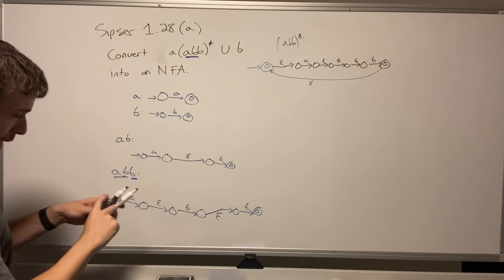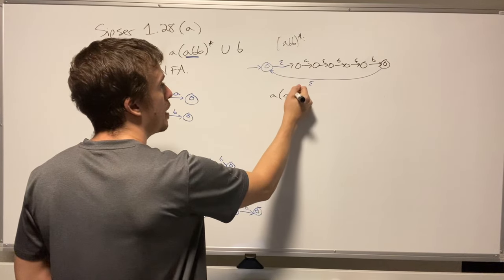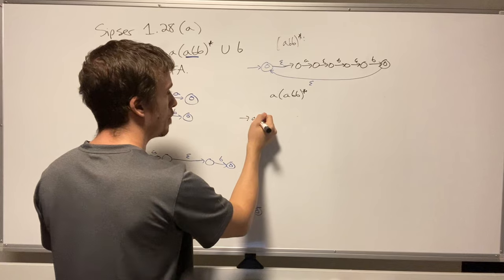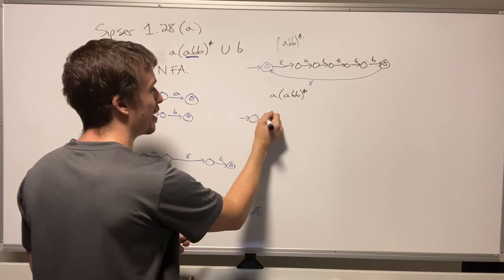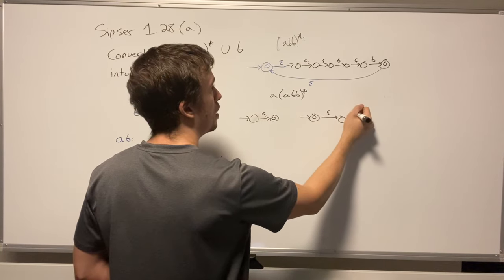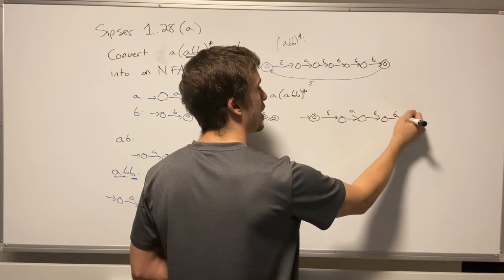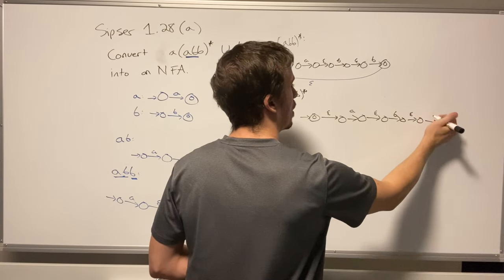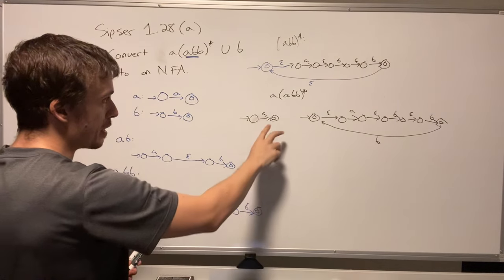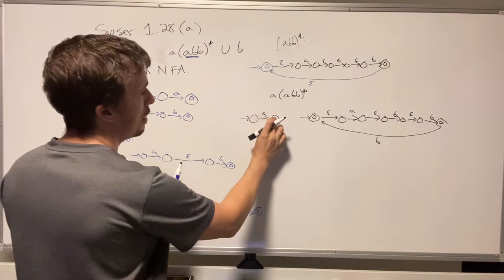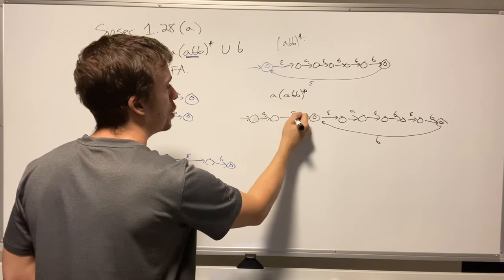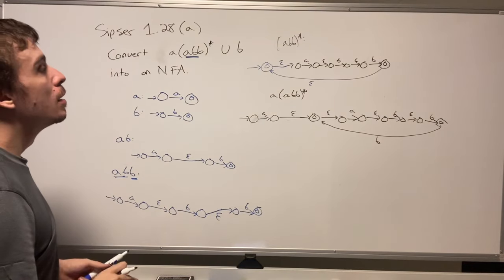Now let's do the concatenation of 'a' with 'abb*'. I have the 'a' machine on the left, and then the 'abb*' machine — with transitions a, epsilon, b, epsilon, b and the star looping — on the right. You can see why a computer is really useful for a task like this. I connect every final state from the first half to the start state of the second half with an epsilon transition, just like before.